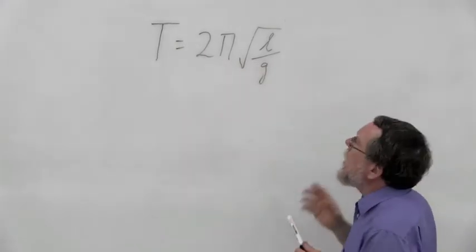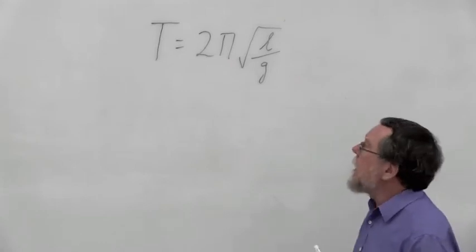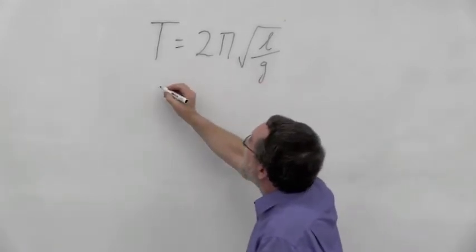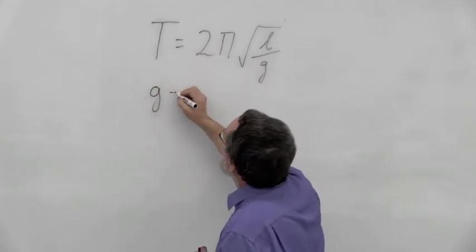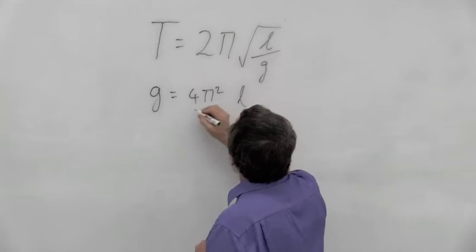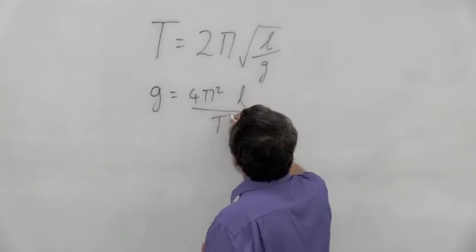But what we're going to do today is rewrite this and make g the subject. So let's just do that and write g equals 4π² l over T².